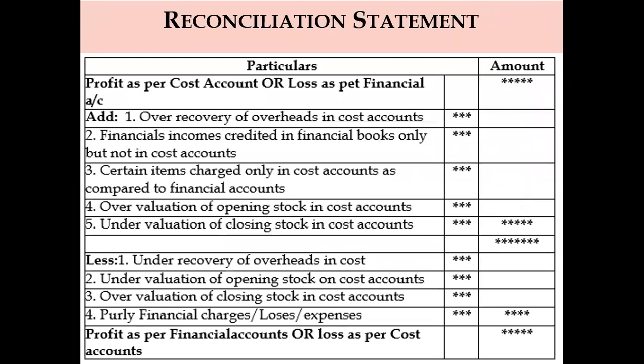Before going to the procedure, let us see how the reconciliation statement looks like. The base we are going to take on top of this format is profit as per cost account or loss as per financial account. When we take profit as per cost account as base, certain items are to be added and certain items are to be deducted. Finally, when we add and deduct these items, we arrive at profit as per financial accounts or loss as per cost accounts.